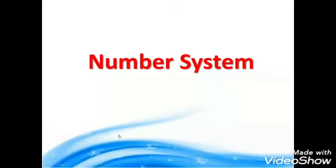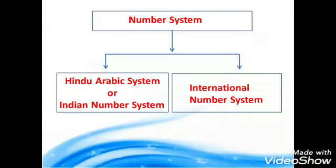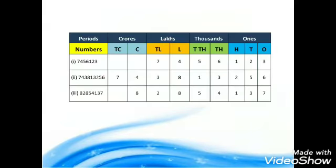Today we are going to learn about the number system. The number system has two types. Number one is the Hindu-Arabic system, or Indian number system. Number two is the international number system.